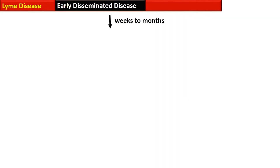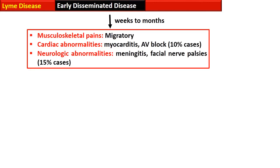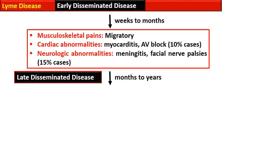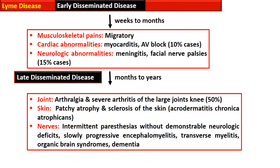Early disseminated disease starts weeks to months after the early localized lesion and is characterized by migratory musculoskeletal pain, cardiac abnormalities such as myocarditis and acute ventricular block present in 10% of cases, and neurological abnormalities such as meningitis and facial nerve palsies present in 15% of cases. Late disseminated stage occurs months to years later and is characterized by arthralgia and severe arthritis of large joints present in 50% of cases, with the knee joint most commonly affected. Skin lesions include acrodermatitis chronica atrophicans, with patchy atrophy and sclerosis of the skin.